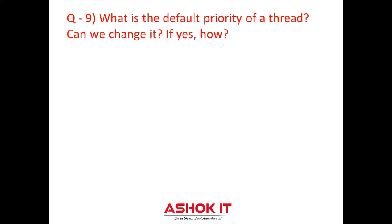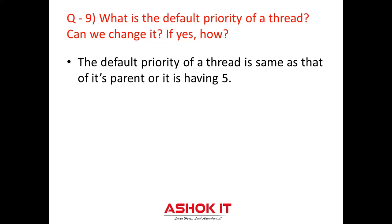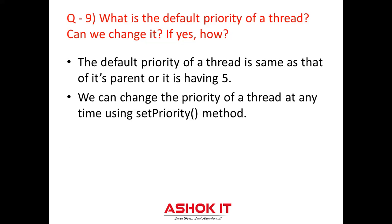Question nine: What is the default priority of a thread? Can we change it? If you are not setting any priority, then the default priority of a thread is its parent's priority, or it is 5. If you want to change that priority, you can use the setPriority method.